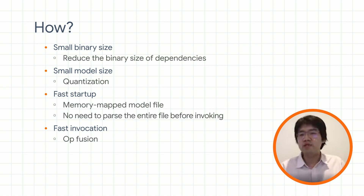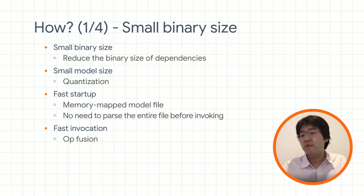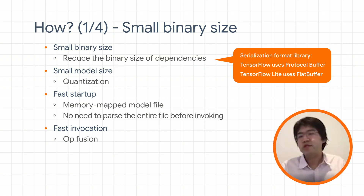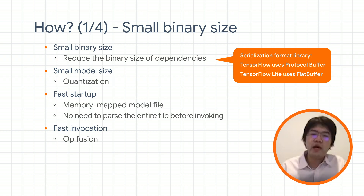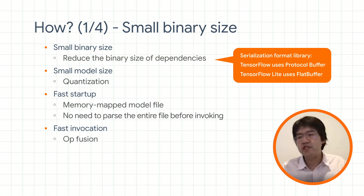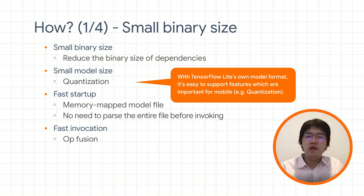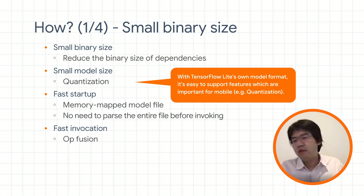When choosing the model format for TensorFlow Lite, we assessed different options. TensorFlow uses protocol buffers, an open source serialization library by Google. TensorFlow Lite uses FlatBuffers, also an open source library by Google. Back in 2017, we found that protocol buffers introduced at least one megabyte of binary size, while TensorFlow Lite's initial version including FlatBuffers but excluding kernels was below 150KB. By having our own model format, it also allows us to move faster and implement important features like quantization — we can just add the fields we need into the model schema.